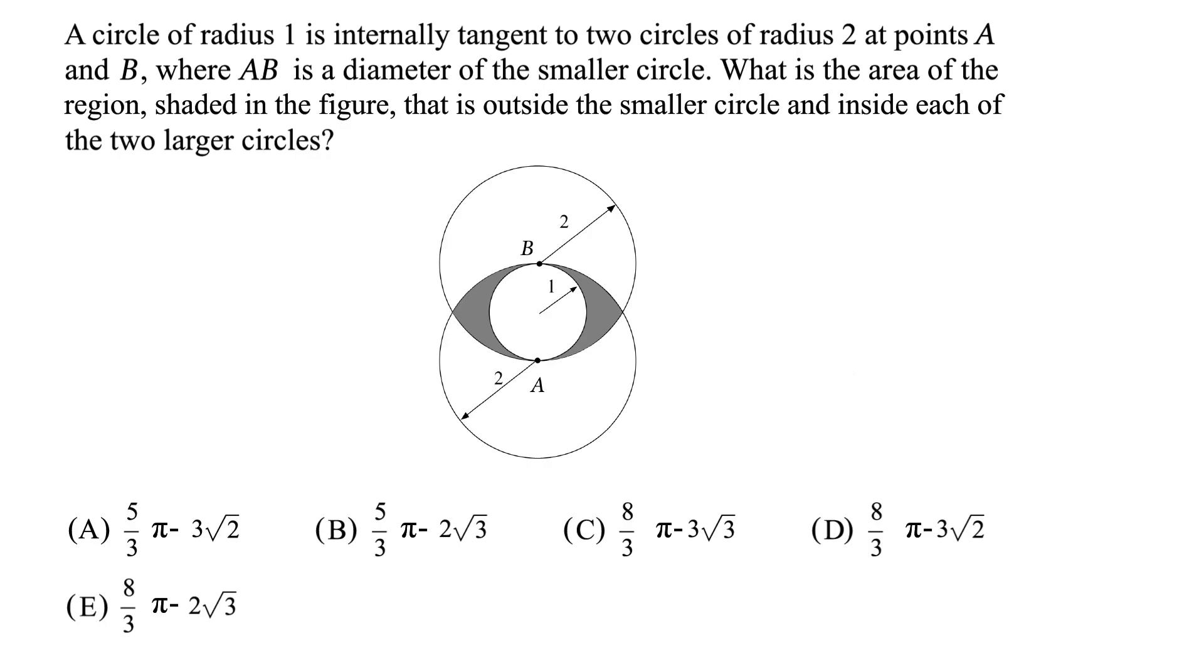What is the area of the region shaded in the figure that is outside the smaller circle and inside each of the two larger circles?